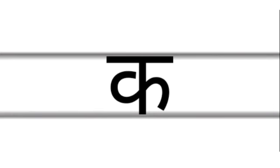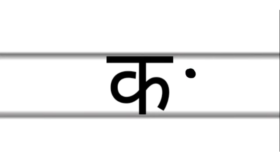Next letter: Kaṃ. How do you write Kaṃ? First, you add a dot above the consonant. What is this letter, children? Kaḥ. What is this letter, children? Kaga.